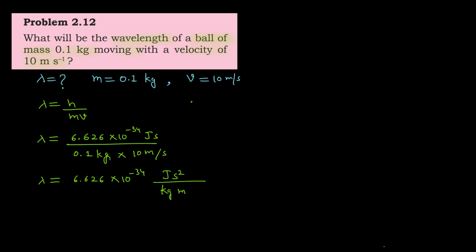See, 1 joule equals 1 kg meter square per second square. This is the value of 1 joule. Put this here, so lambda equals 6.626 into 10 to the power minus 34.